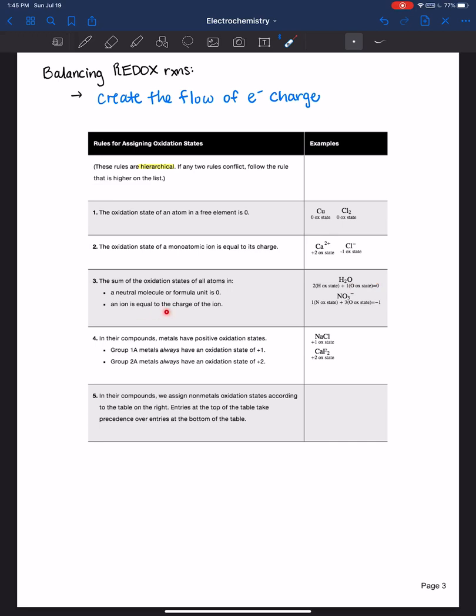An ion is equal to the charge of the ion. For example, there are polyatomic ions like nitrate and so all the oxidation states need to add up to a negative one.